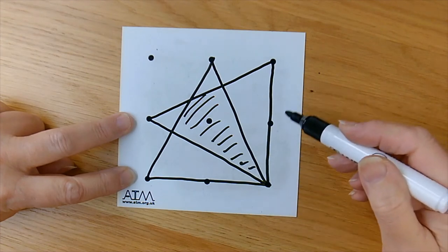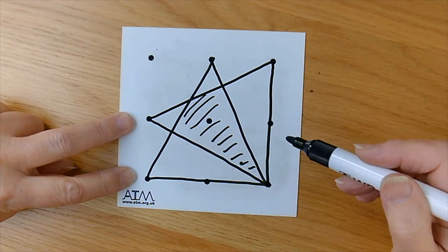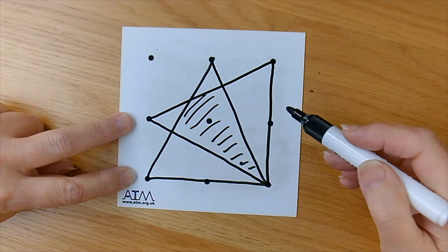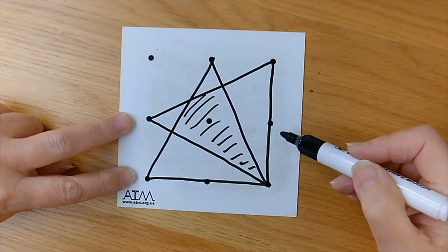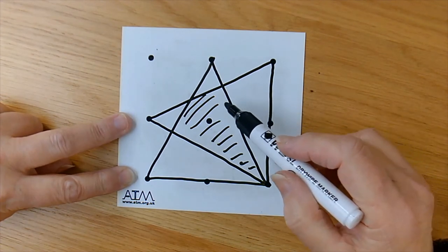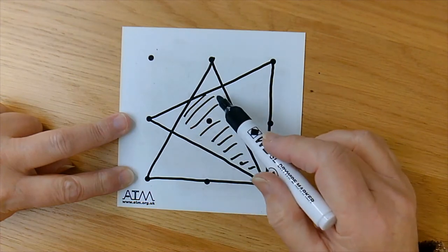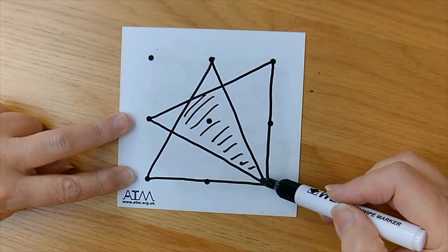This problem, along with some others like it, are in the GCSE problem-solving book that ATM publishes. So here we have two triangles overlapping. What is the area?